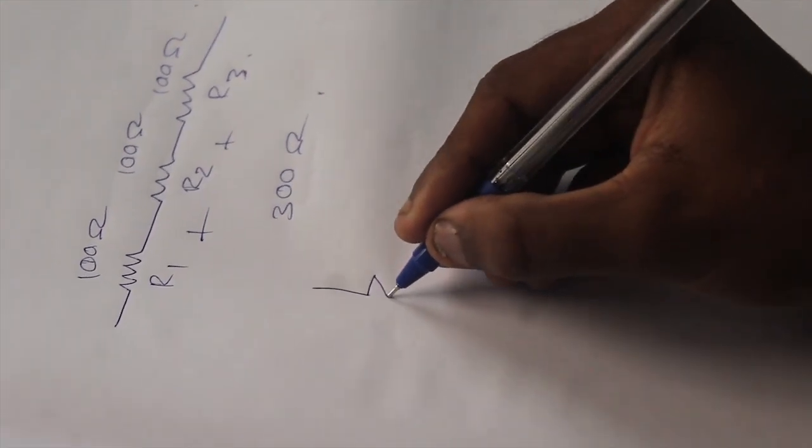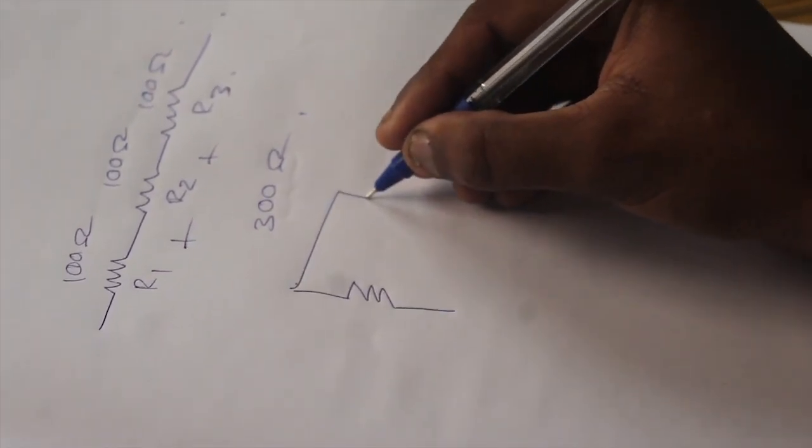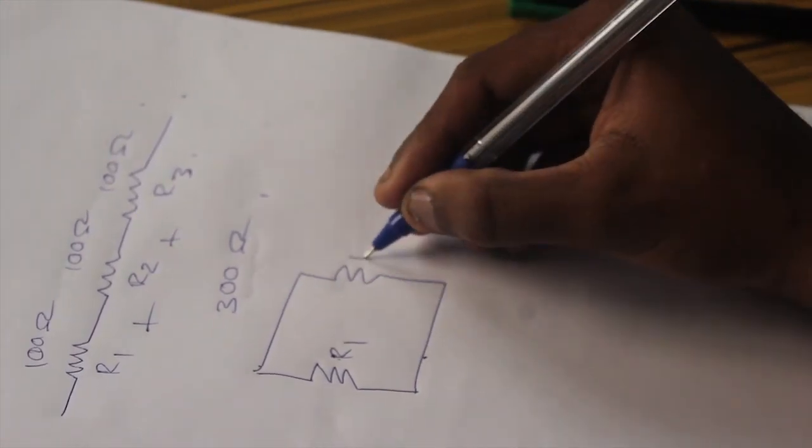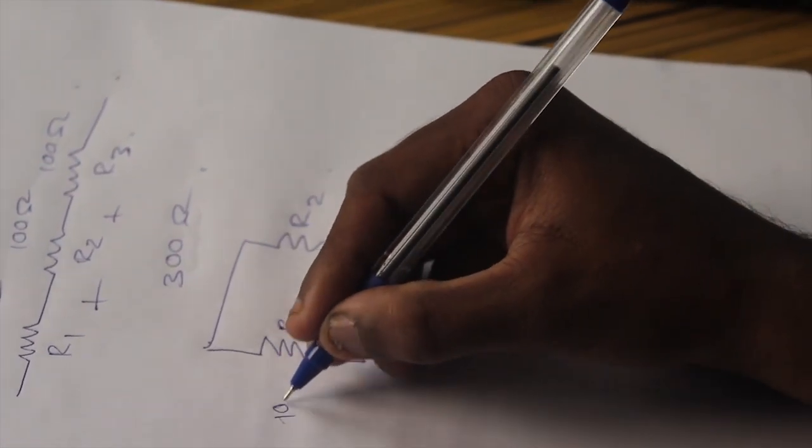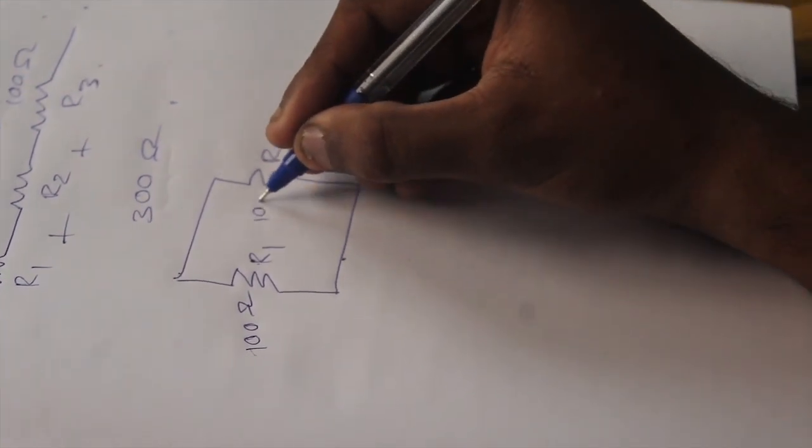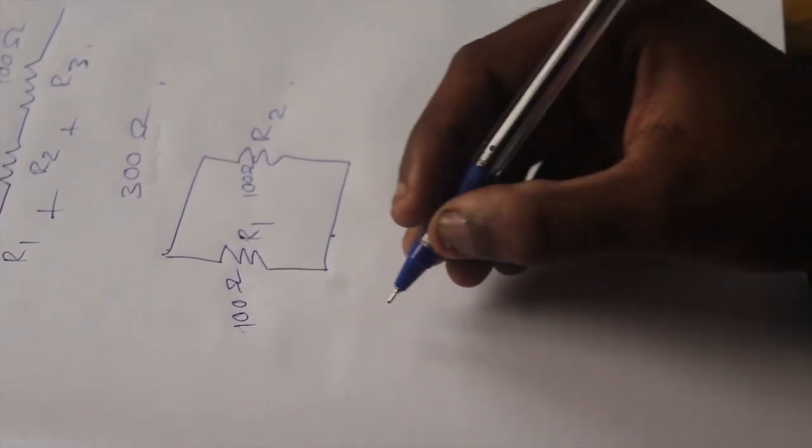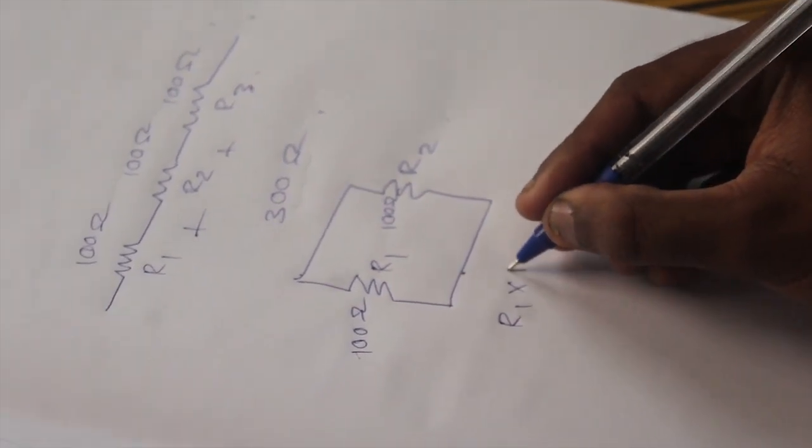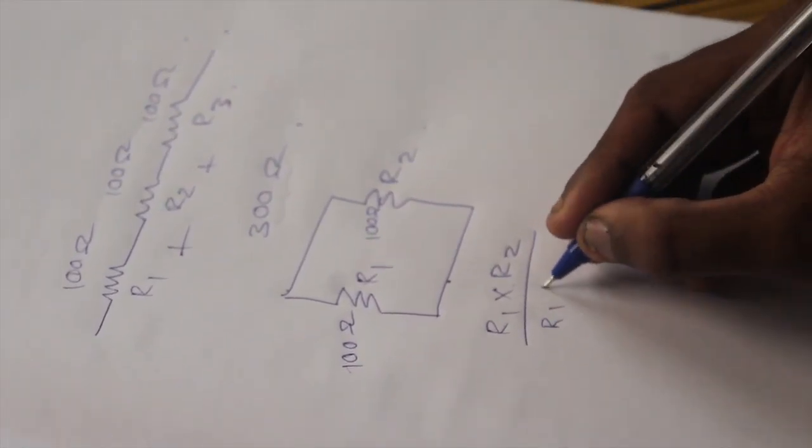In a parallel circuit, the resistance value gets divided. I am considering two resistors, R1 and R2, each resistance value is 100 Ohm. The formula to calculate the parallel resistance is R1 into R2 divided by R1 plus R2.